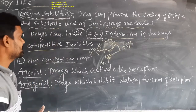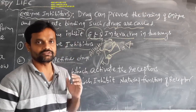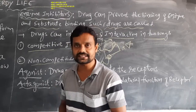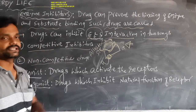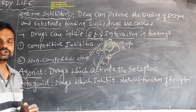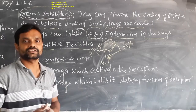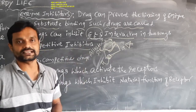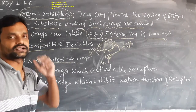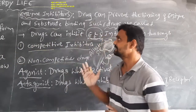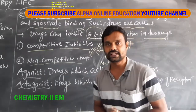There are two ways to prevent the enzyme and substrate interactions. In one way, the drug occupies the active site of the enzyme — that type of drug is called a competitive inhibitor. In another way, the drug occupies the allosteric site of the enzyme, causing the active site to change so the substrate cannot bind — that type of drug is called a non-competitive drug. So there are two types of enzyme inhibitors: competitive inhibitors and non-competitive inhibitors.